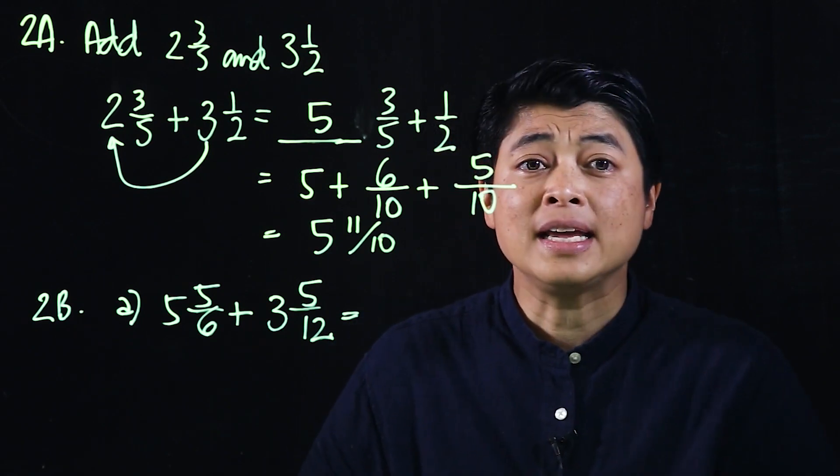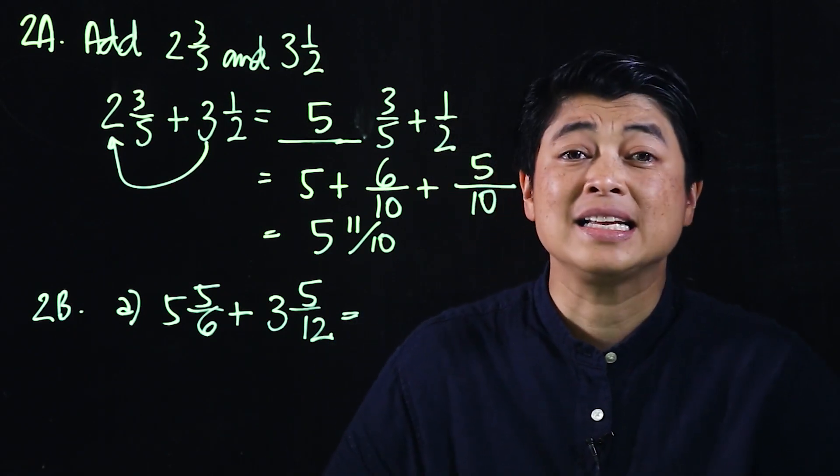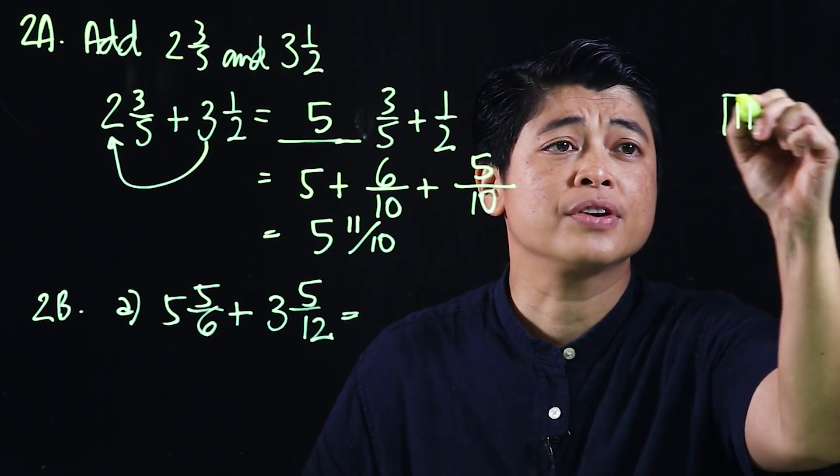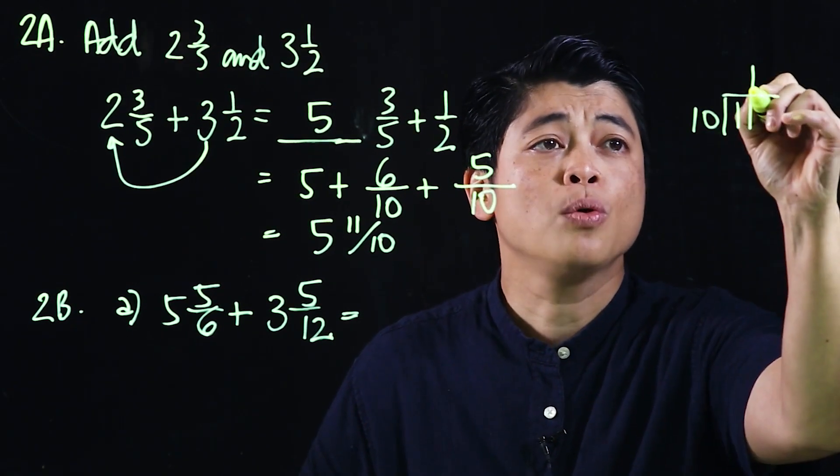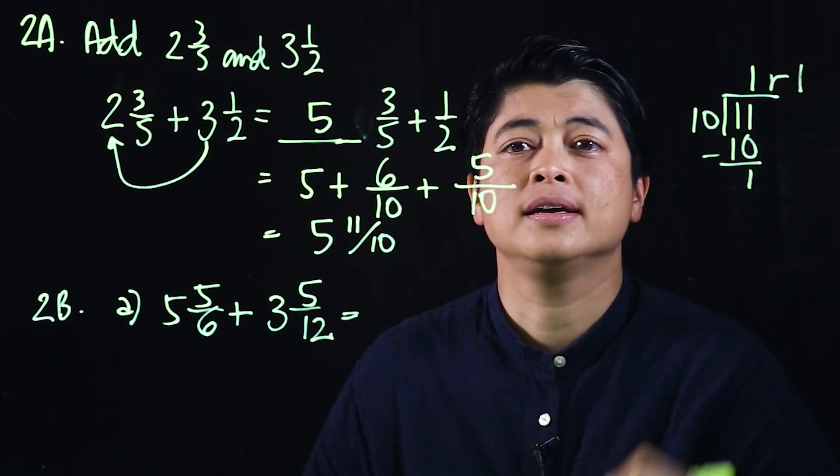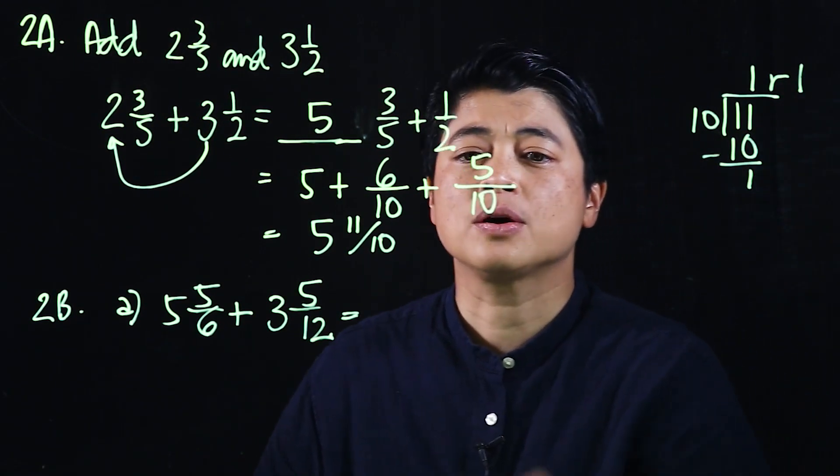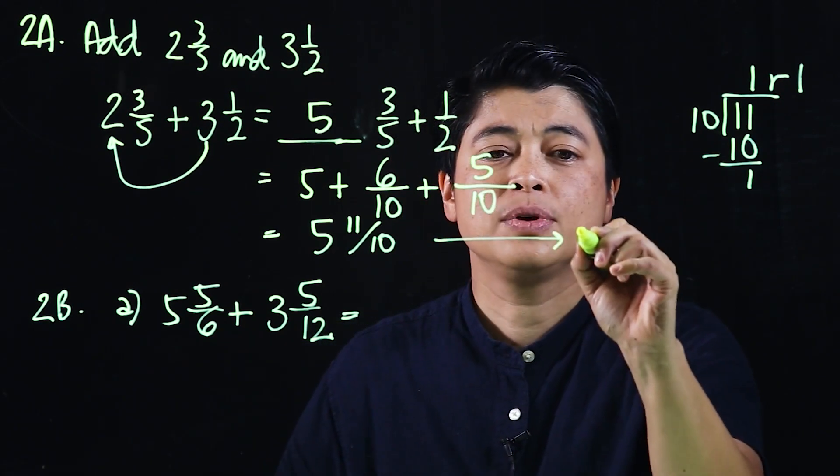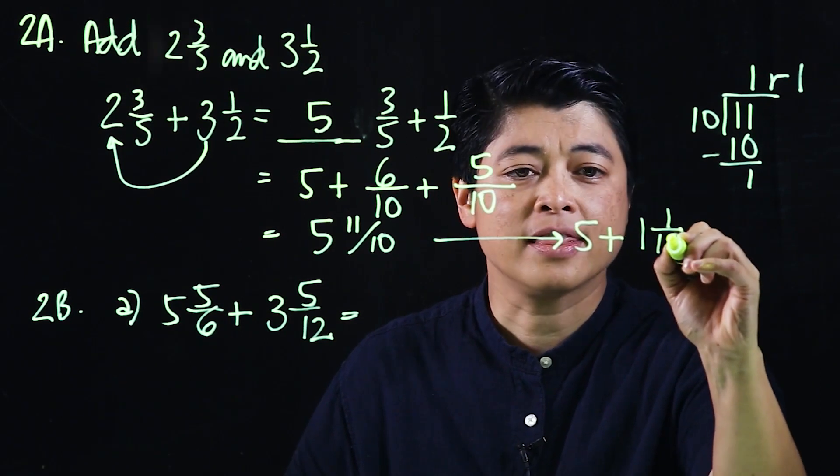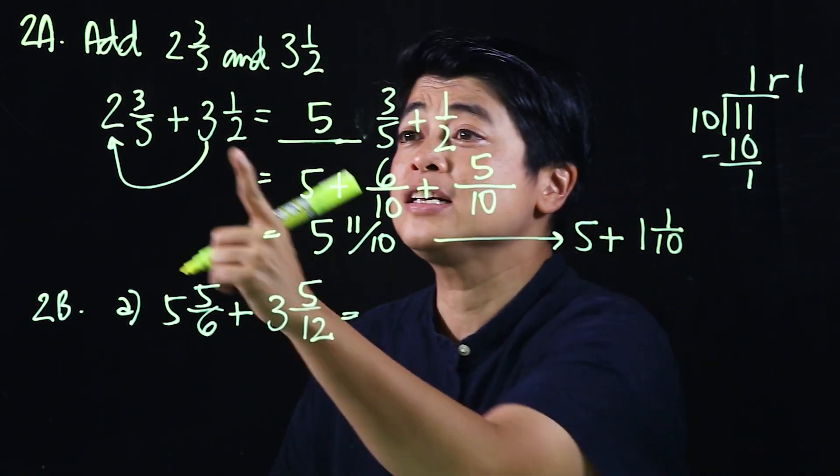Clearly 11/10 is improper, and the equivalent of 11/10 is 1 remainder 1, which means the 1 remainder 1—I'll put it here—would be 5 and 1 and 1/10, so our final answer when we add those two together is 6 and 1/10.